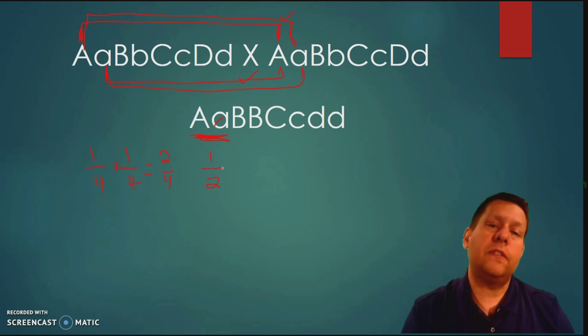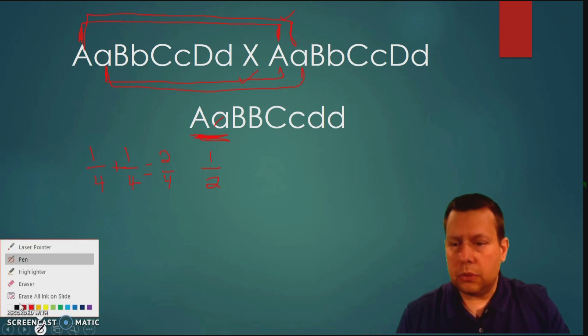So there is a one half of a chance of the offspring getting those alleles. So now we're going to go to the next one. We'll go to letter B and I'm just going to change the color of the marker because I think that will help.